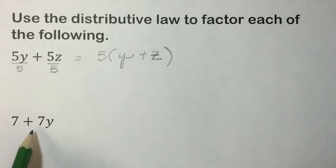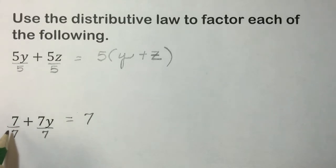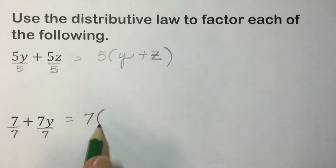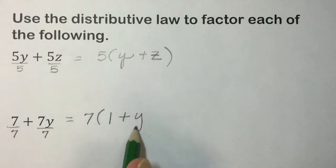In this next one, the common factor of these two terms is 7. So using the distributive law, we're going to undo that distribution of multiplication by factoring, which is dividing, and 7 divided by 7 leaves us a 1. 7 divided by 7 cancels out leaving a 1, but we still have that Y term.